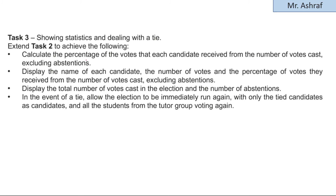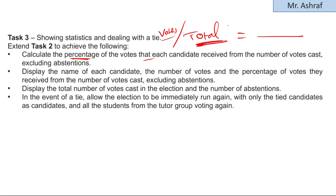The next step is to enter the names of the candidates — for example, Candidate One, Candidate Two, Candidate Three. The next question should ask the user to input their vote or abstain. A message should appear asking the user to press 'V' to vote or 'A' to abstain. This covers Task 1.